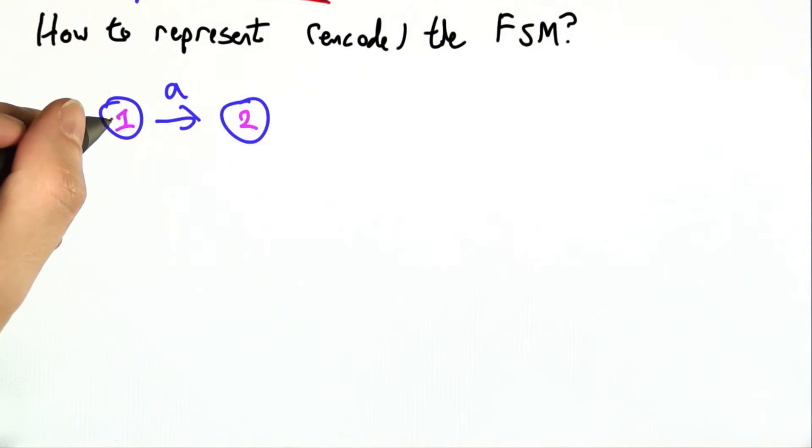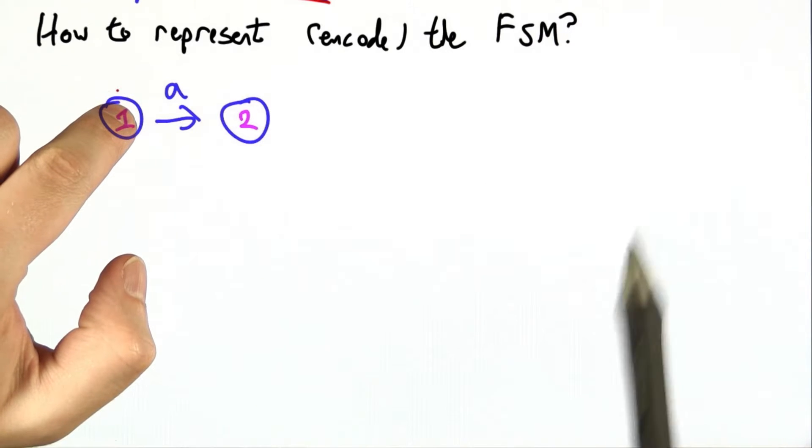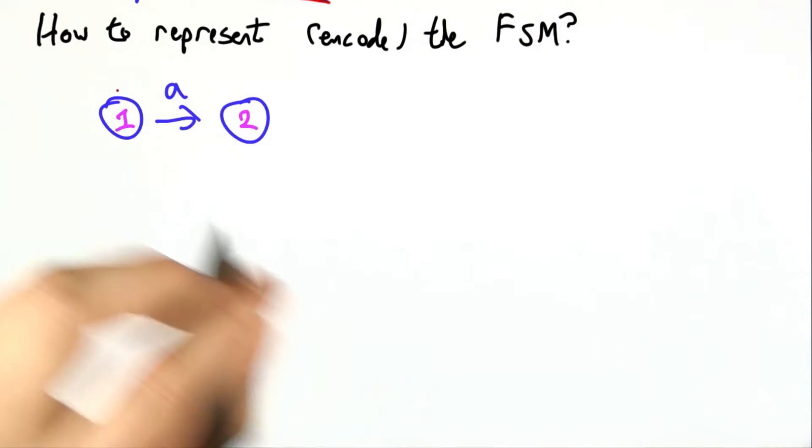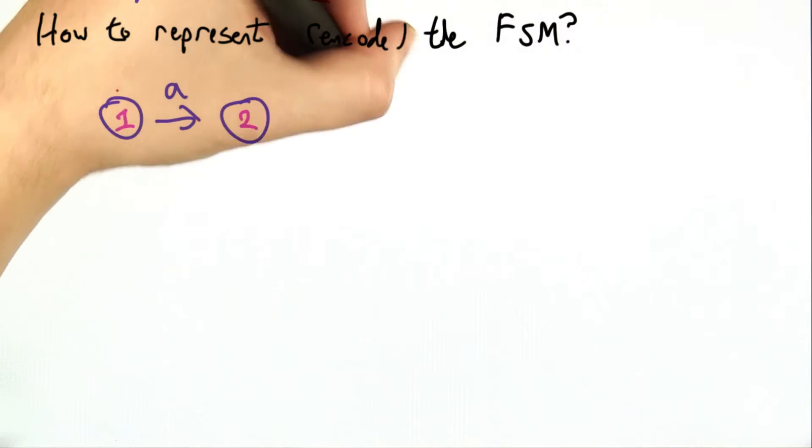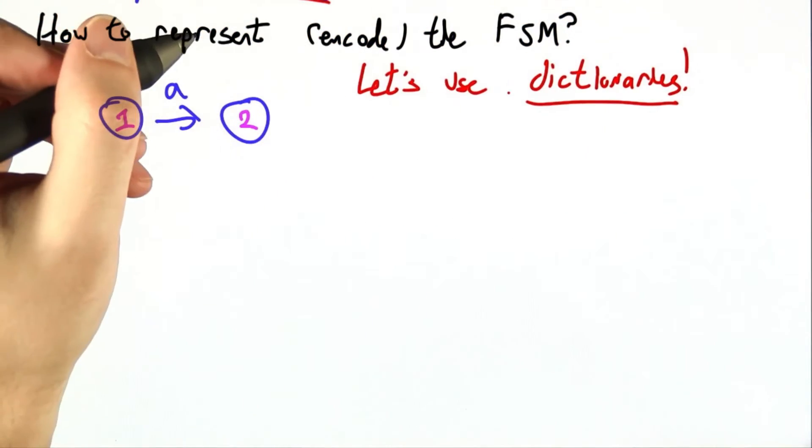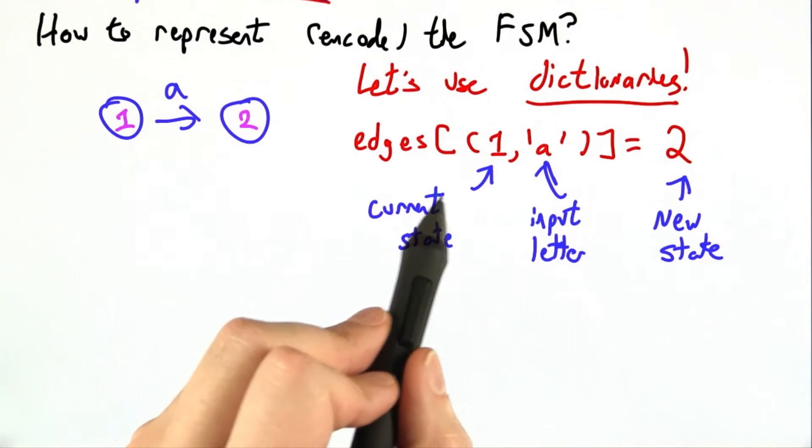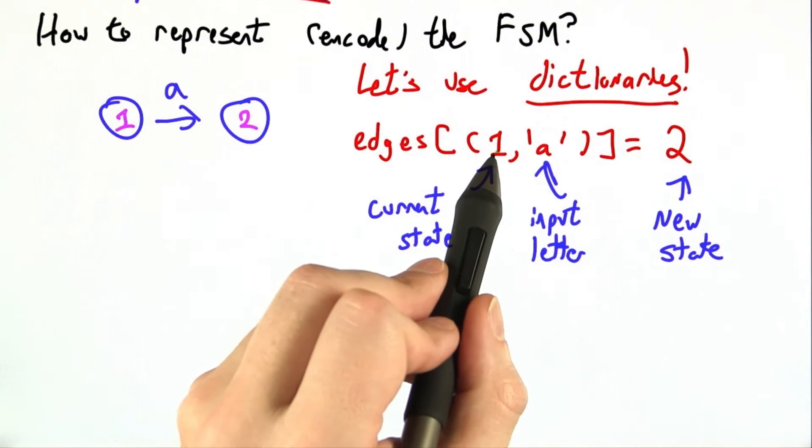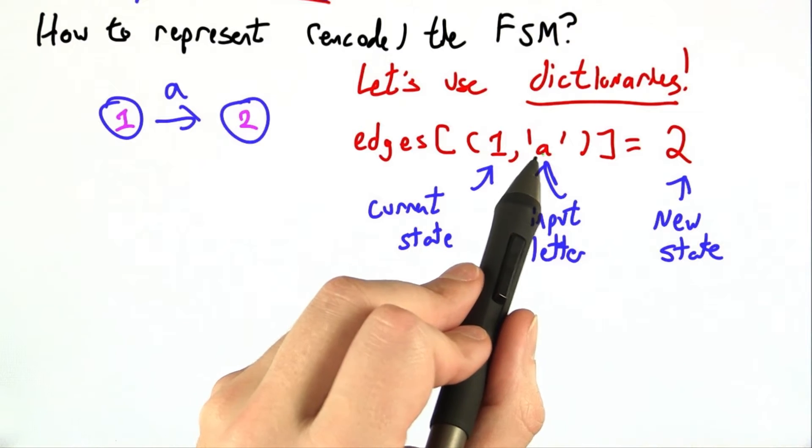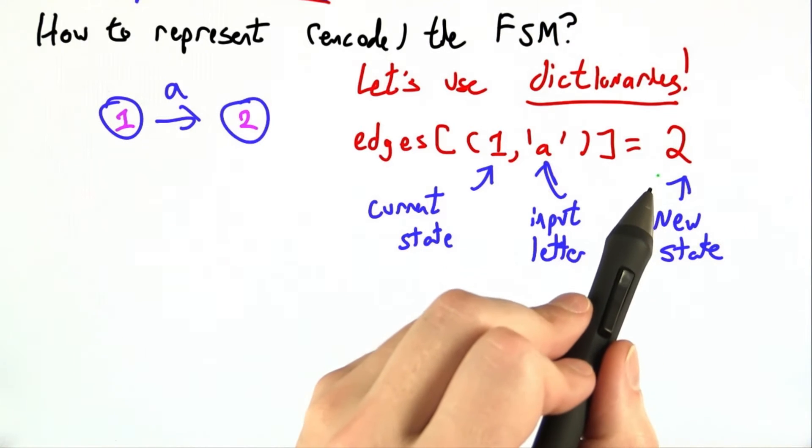What we really want to know from an edge is, if I'm in state 1 and the next input is A, where do I go? So let's use Python dictionaries or maps to do this. I'll make a Python dictionary or map called edges, and I'll just pass in my current state and the input letter, and it will give me the new state at the end.